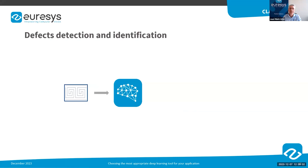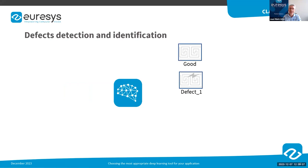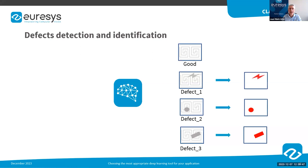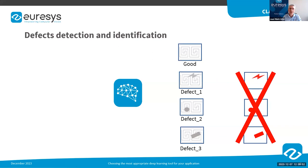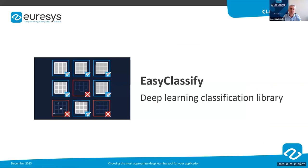After the training process, the classifier is able to classify images, meaning that for any given image it returns a list of probabilities that the object belongs to one of the classes it has learned. In case of defect detection, a classifier is able not only to detect defective products but also to identify the type of defects. However, what the classifier cannot do is accurately locate the defect itself, and this is the main limitation of classifiers.